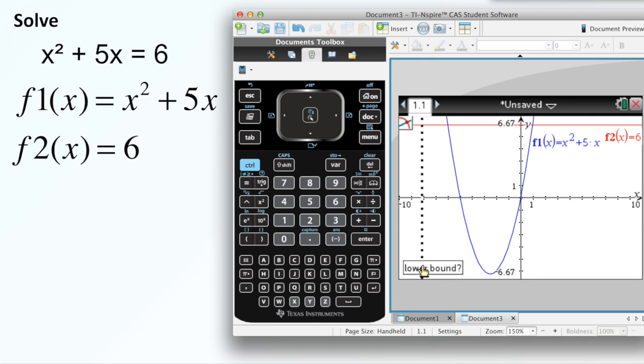Now it asks for the lower bound. What that basically means is I need something on this side of it. Now we're going to be looking for two intersections, but I've got to do them one at a time. So anywhere on this side of it is fine. I'm just going to go right here, and I'm going to click. Now it says upper bound. So I just have to go until it crosses. You notice as soon as it crosses, it gives me an intersection point right there. It pops up, and it says this intersection. As long as it crosses there, then I can click it.